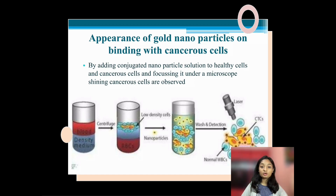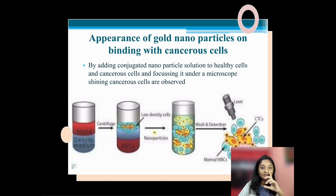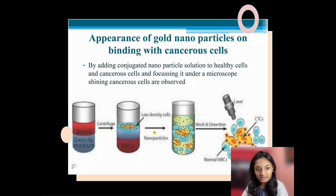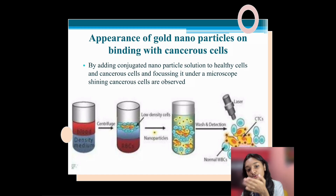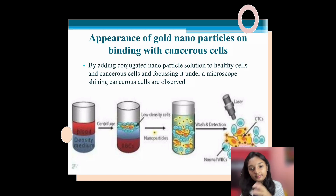Regarding the appearance of gold nanoparticles on binding with cancer cells: conjugated nanoparticles are added to a solution of healthy cells and cancerous cells and focused under the microscope, where shining cancerous cells are absorbed. The procedure involves blood and density medium centrifuge, then low density cells are collected and nanoparticles are added, which then act on the cancerous cells while distinguishing normal white blood cells.